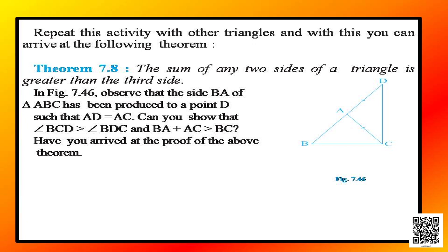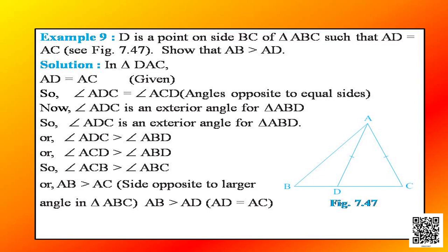Let us now take some examples based on these results. We will discuss example 9. It says D is a point on side BC of triangle ABC such that AD is equal to AC. We need to show that AB is greater than AD. Let me draw the diagram first.